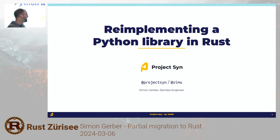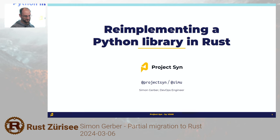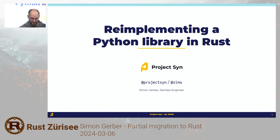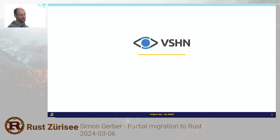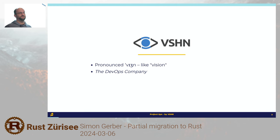Thanks for the intro. My name is Simon. You can find me on GitHub at CIMU. My official title is DevOps engineer, whatever that means. I work at a company called Vision — it's pronounced Vision like Vshn even though it's spelled funny. We call ourselves the DevOps company, that's probably why my official title is DevOps engineer.